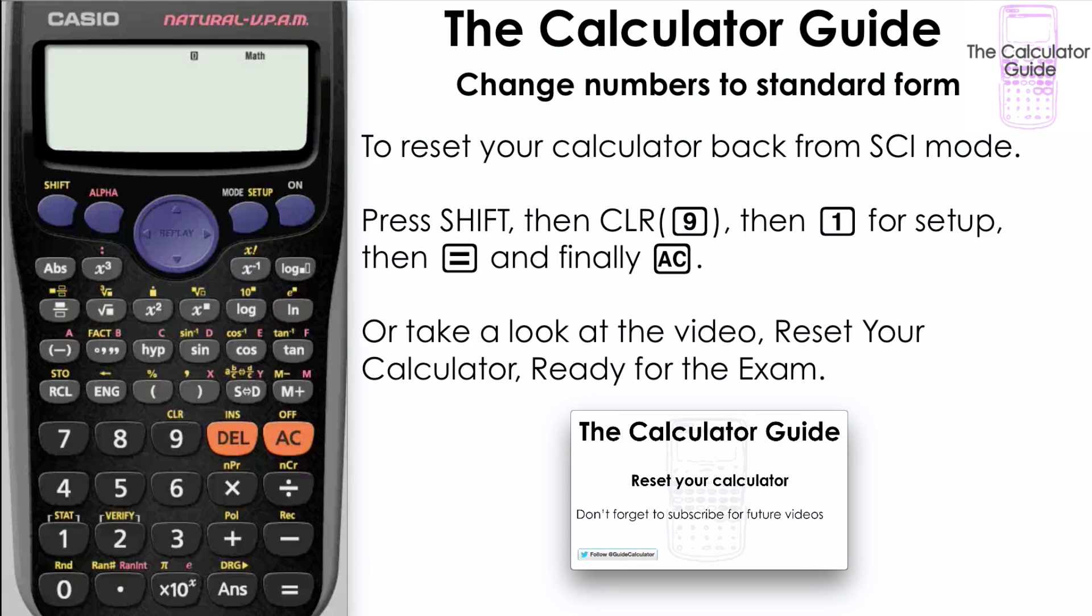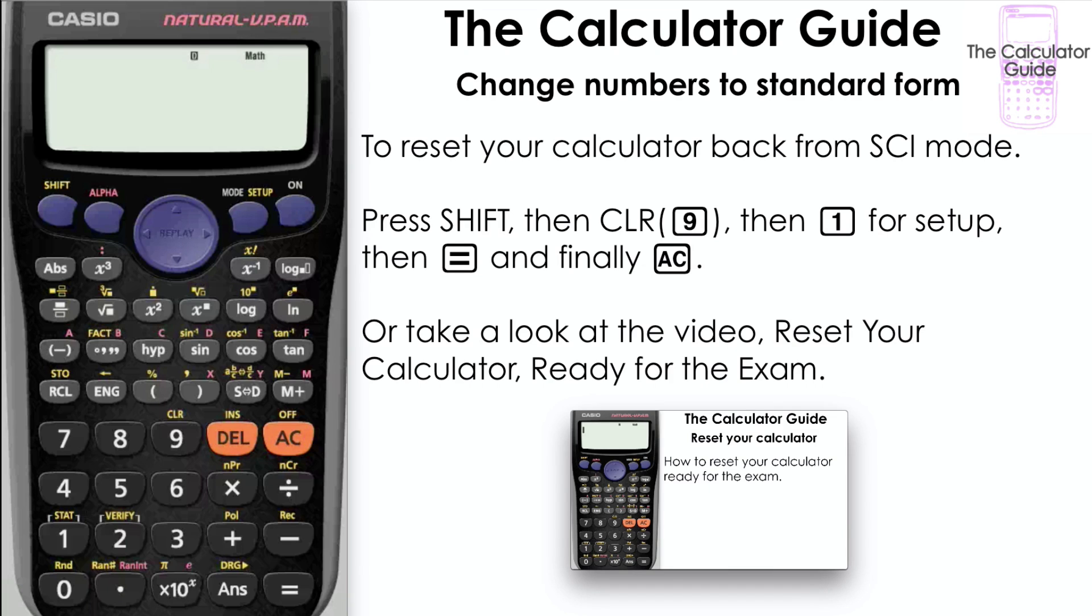If you need to reset your calculator back to normal mode from science mode, press SHIFT and then CLEAR, then 1 for setup, then equals, and then finally AC. Or alternatively, you can watch this video in order to learn how to reset your calculator.